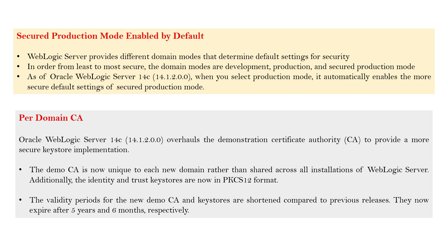For each and every domain, you will get a unique CA certificate. Additionally, the identity and trust keystore is now stored in PKCS-12 format — previously WebLogic used JKS format. The validity period for new demo certificates and keystores has also been shortened compared to previous releases: they now expire after 5 years and 6 months respectively. So if you are using demo certificates in your environment, you will need to renew them after 5 years and 6 months. This will be shown in the practical session covering complete end-to-end installation and domain configuration.